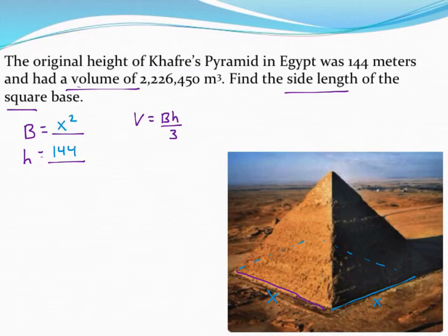So let's go ahead and take this information, get it plugged into this formula to see if we can figure out what that side length is going to be. So the volume was given to me, that's that 2 million number. So 2,226,450 is my volume of the pyramid.